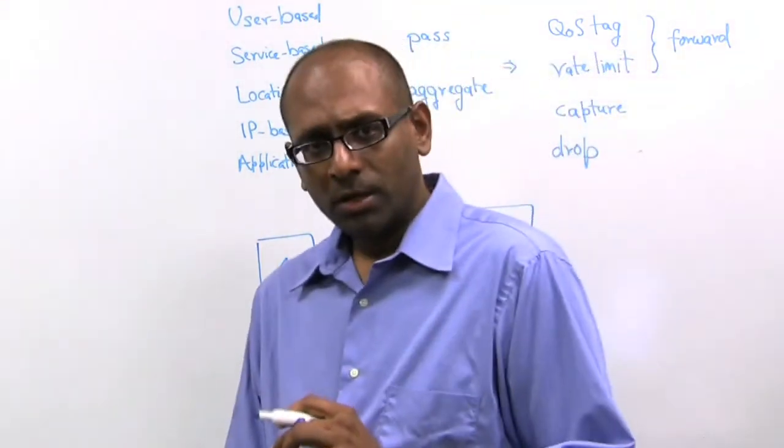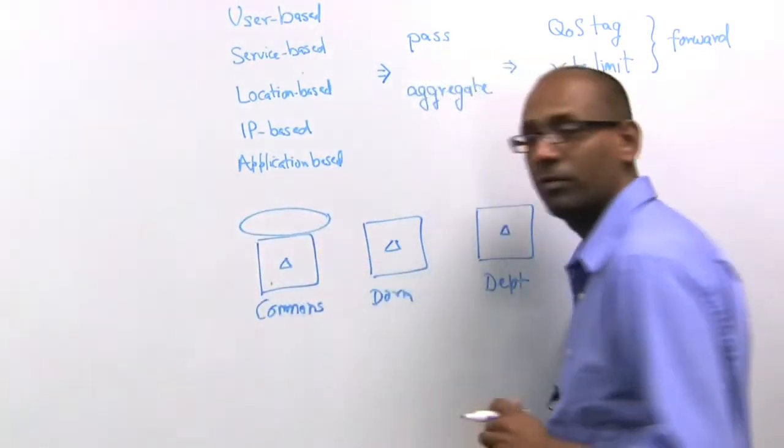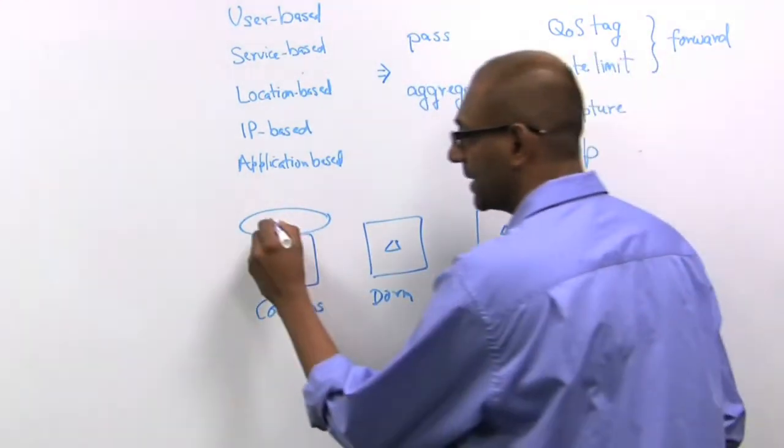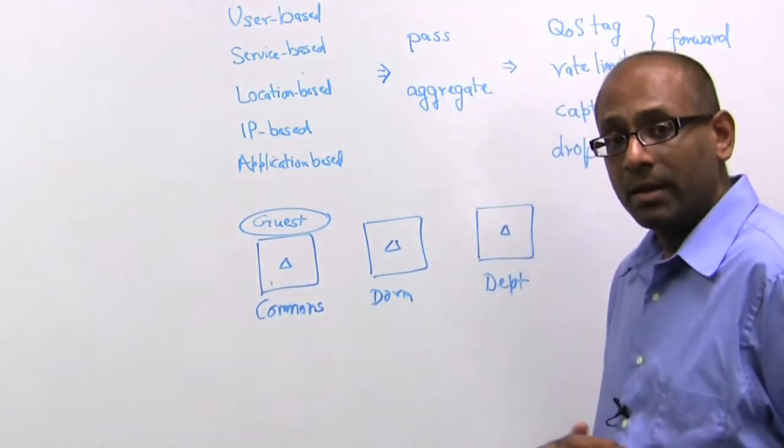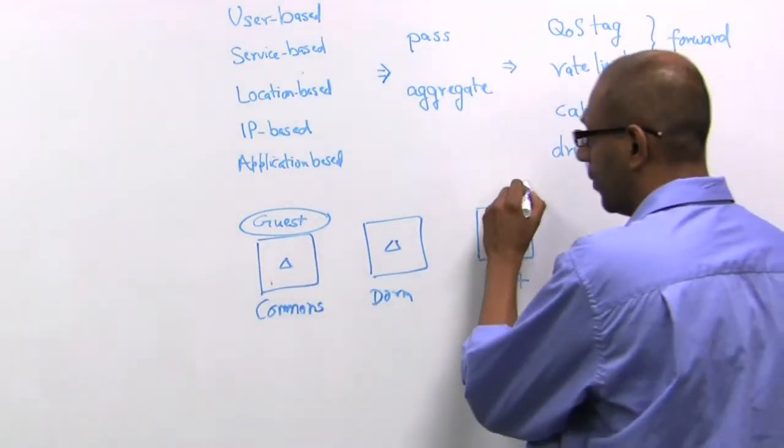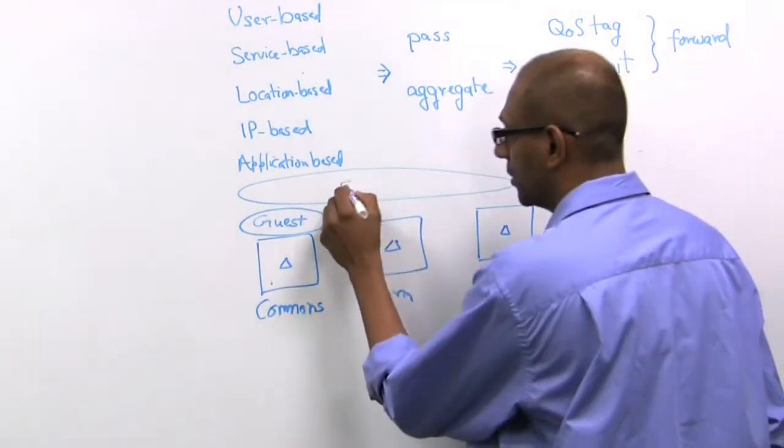Now, the university might have two SSIDs. One SSID that's only available from the commons area, and maybe that's a guest access. And the second SSID might be one that is available pervasively throughout the campus, and that is called the student SSID.